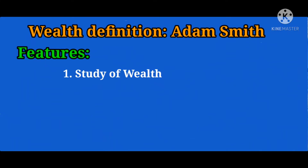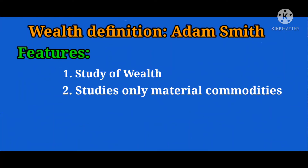Feature number one: study of wealth. Economics deals with the study of wealth only according to Smith. Therefore it is concerned with the activities of man related to production, consumption, exchange, and distribution of wealth. The next feature is that it focuses on only material commodities. Material goods must be scarce in relation to demand.